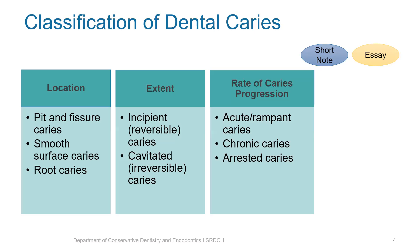Based upon the progression rate of caries, caries can be classified into acute or rampant caries, chronic caries, and arrested caries.